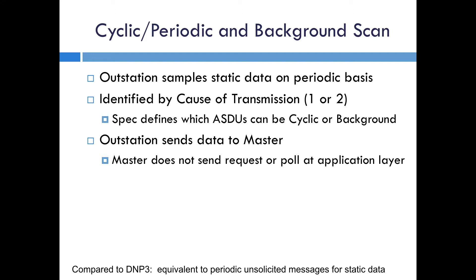Cyclic and background scan are very similar, but cyclic is typically used with a faster sampling time. The specification doesn't really say why you would do cyclic versus background scan, but generally background scan just has a slower period. The important thing here is that the master is not sending a poll request at the application layer — the outstation is directly sending this data to the master on a periodic basis. In some ways this is equivalent to an unsolicited response in DNP3, however it's done on a periodic basis. In DNP3, unsolicited responses always contain event data or data changes, whereas cyclic and background scan is still static data being sent on a regular basis without the need for a pull from the master.